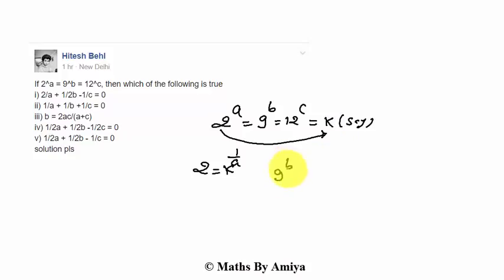9 raised to power B can be written as 3 raised to power 2B equals K, because we assume 9B equals K. So by this, 3 is K raised to power 1 by 2B.